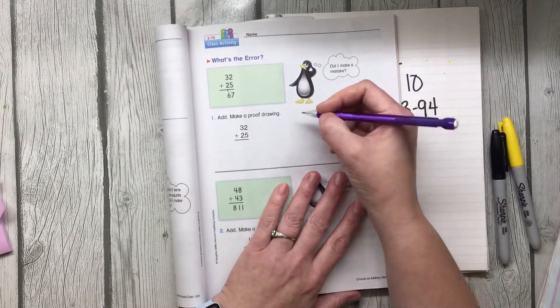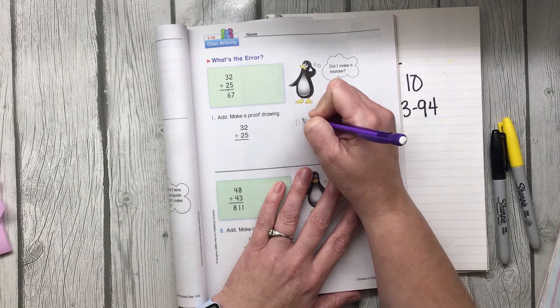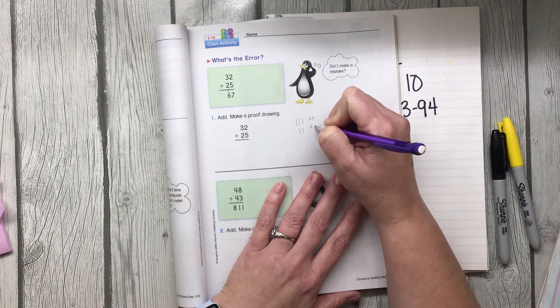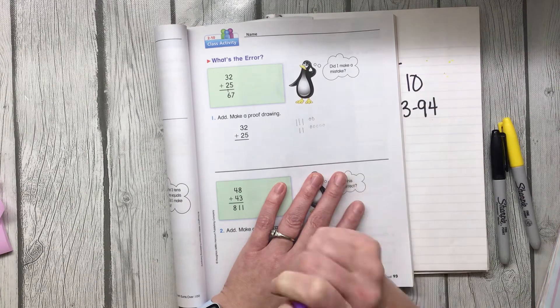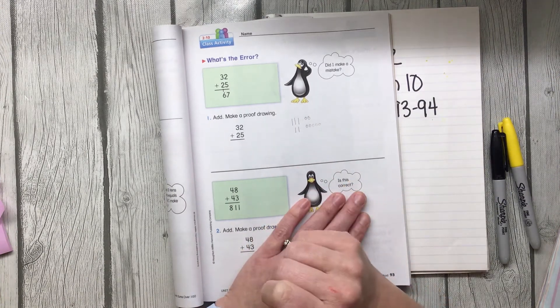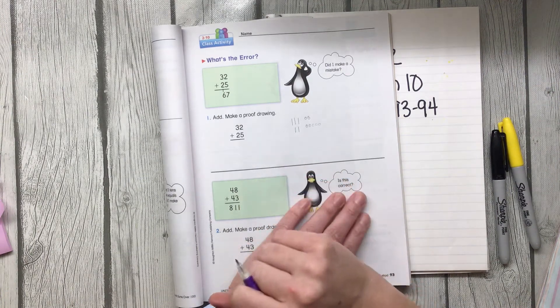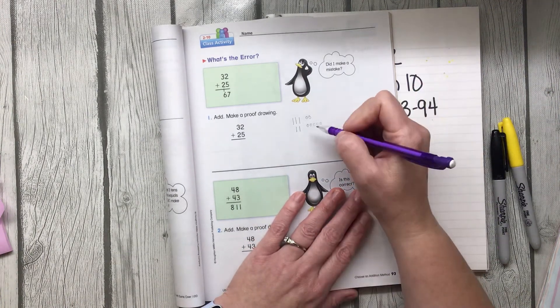So we've got 32 plus 25. [Counting and drawing visual representation: 1, 2, 3... 1, 2... continuing through the units] Now if I were a second grader, I would make sure that I was drawing this right now and doing this so that I have what it should look like on my own page.